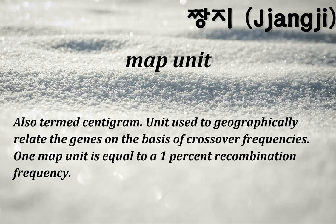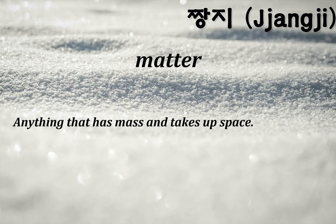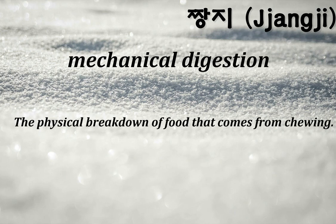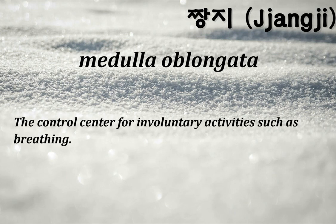One map unit equals a 1% recombination frequency. Matter: anything that has mass and takes up space. Mechanical digestion: the physical breakdown of food that comes from chewing. Medulla oblongata: the control center for involuntary activities such as breathing. Medulla: a region of the kidney.